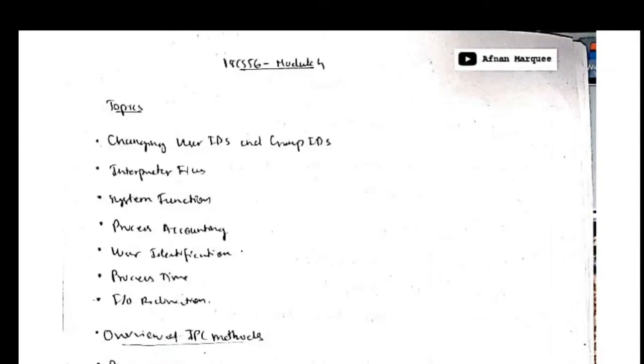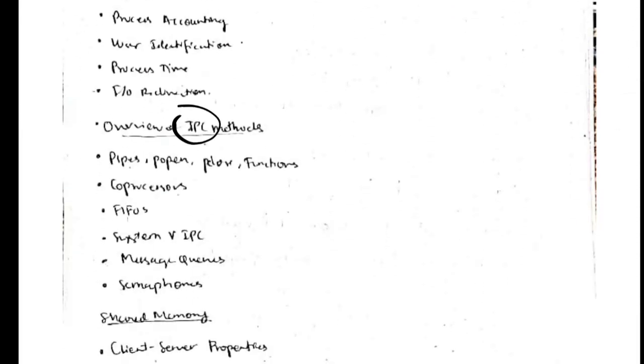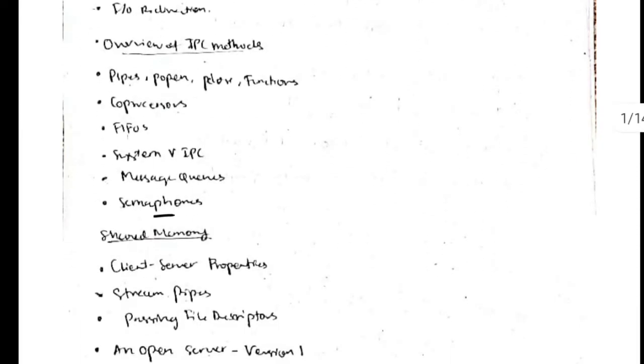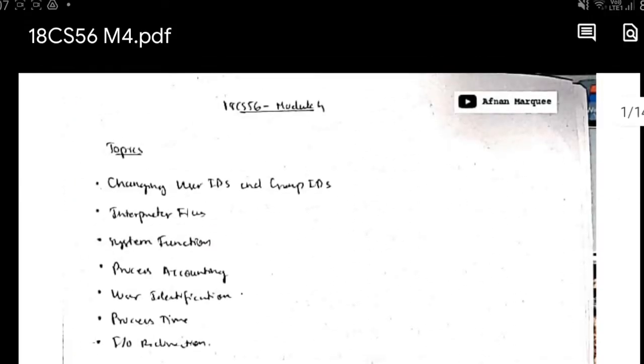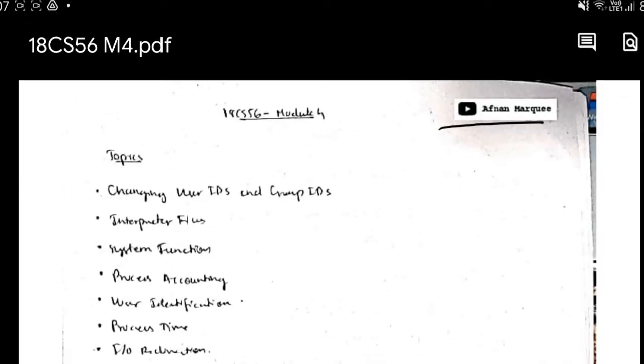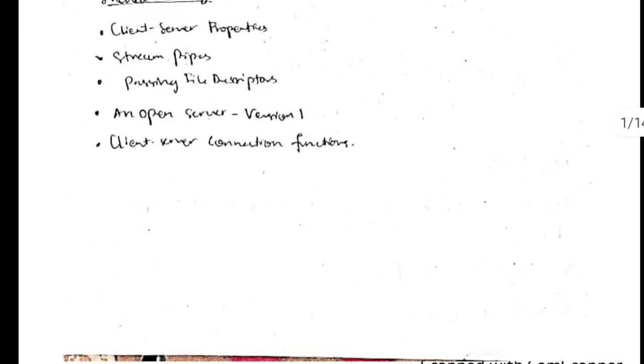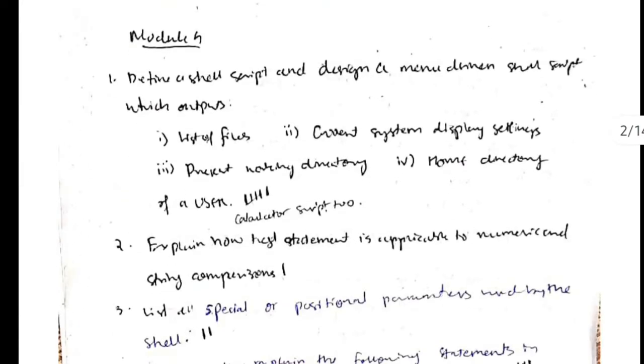Hello everyone, today in this video we'll be discussing the fourth module of Unix and it has three topics. The first one is about the group IDs and user IDs, the second is about IPC which is inter-process communication, and finally we have shared memory. If you like this video, hit the like button and don't forget to subscribe to my channel. After the discussion of topics, we'll be discussing the previous questions.